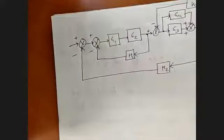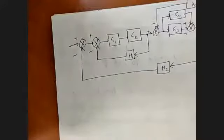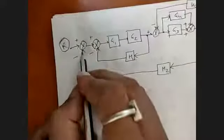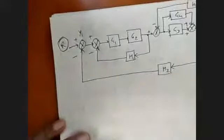A block diagram is given and we have to convert it into an equivalent signal flow graph. First we identify the number of nodes by representing all signals, summing points, and takeoff points as nodes. So we have input R and output Y. The first summing point is Y1, the second summing point is Y2, and another point is Y3.